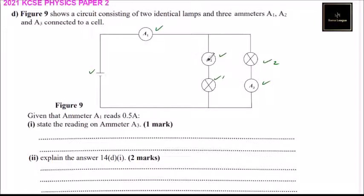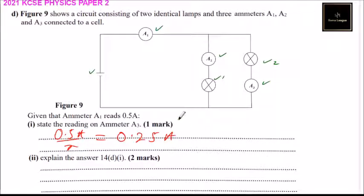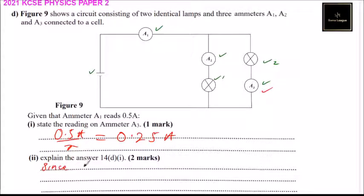The current will be divided equally through the two lamps. Given that ammeter A3 reads 0.5 amperes, you divide by 2 and should get 0.25 amperes. That will be the reading of ammeter A3 for that part. Now explain the answer for 14D part (i): since the bulbs are identical and connected in parallel,